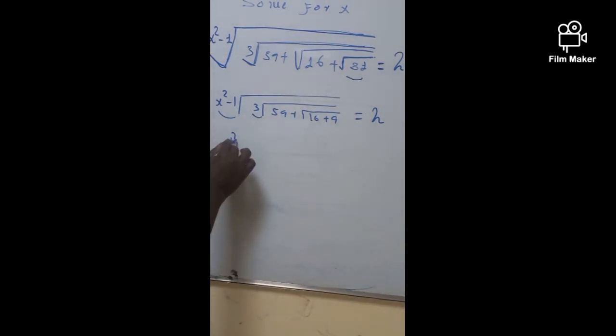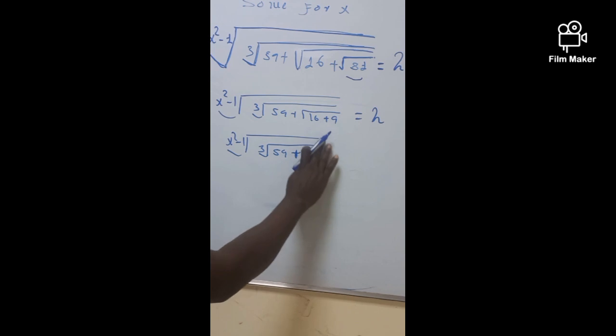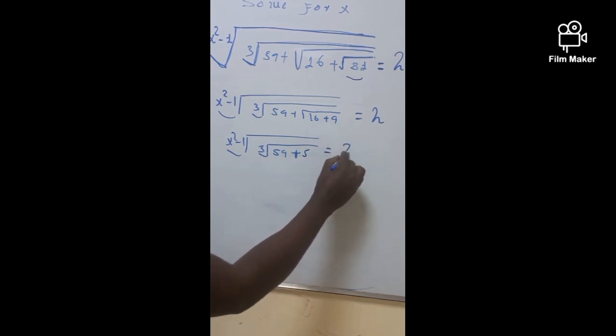Again, this is going to be x square minus 1 root all. The cube root all. That is 59 plus, what is the cube root of 16 plus 9? That's going to be 5. So it is going to be 5. And hence, this is perfectly equal to 2.